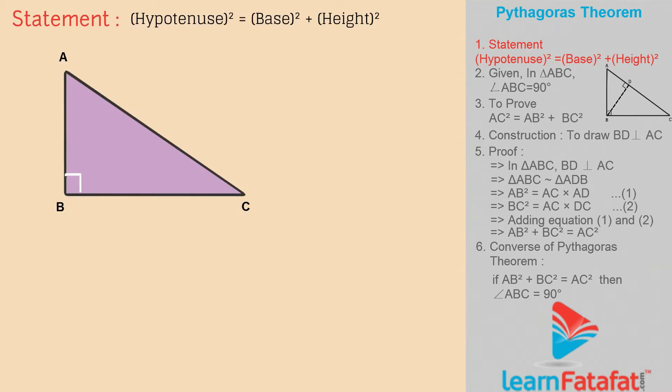In a right-angled triangle, the square of hypotenuse is equal to sum of squares of other two sides. That is, hypotenuse² equals base² plus height².